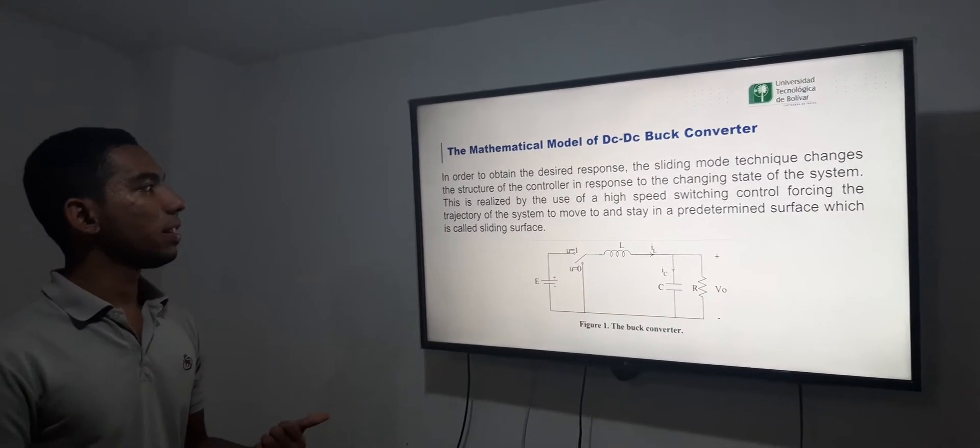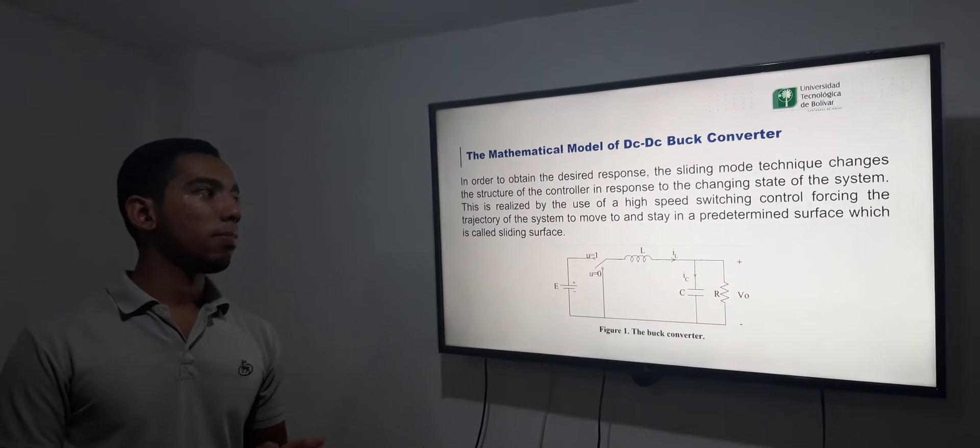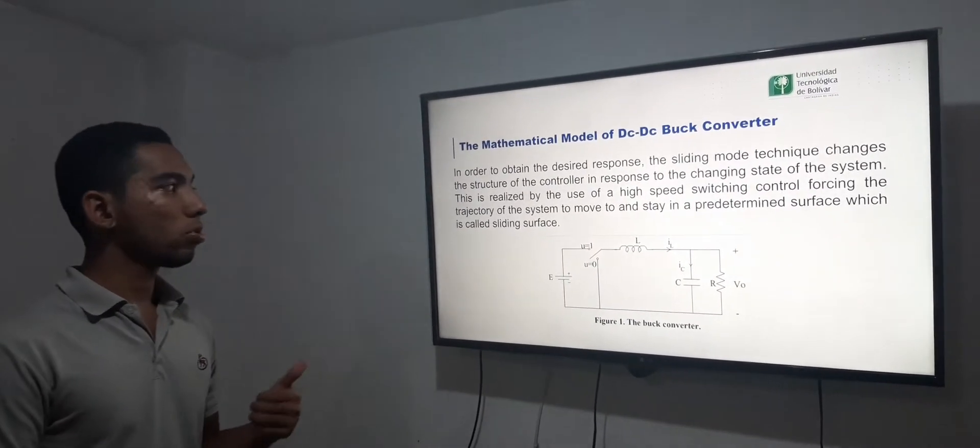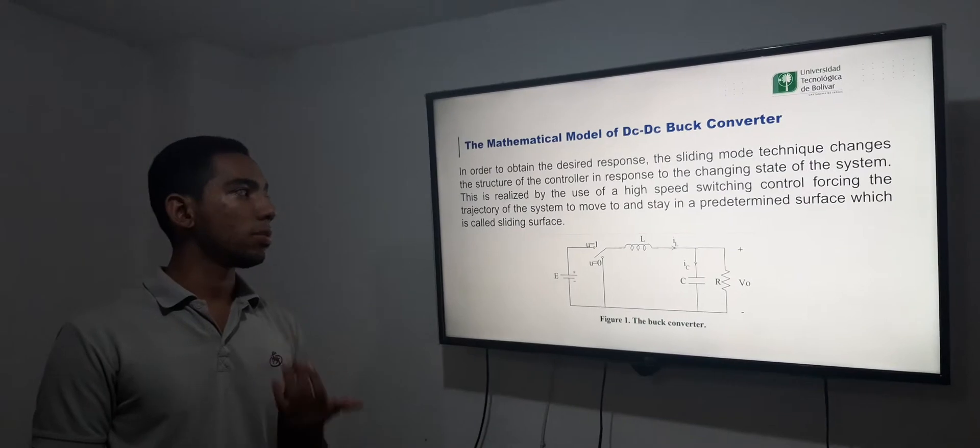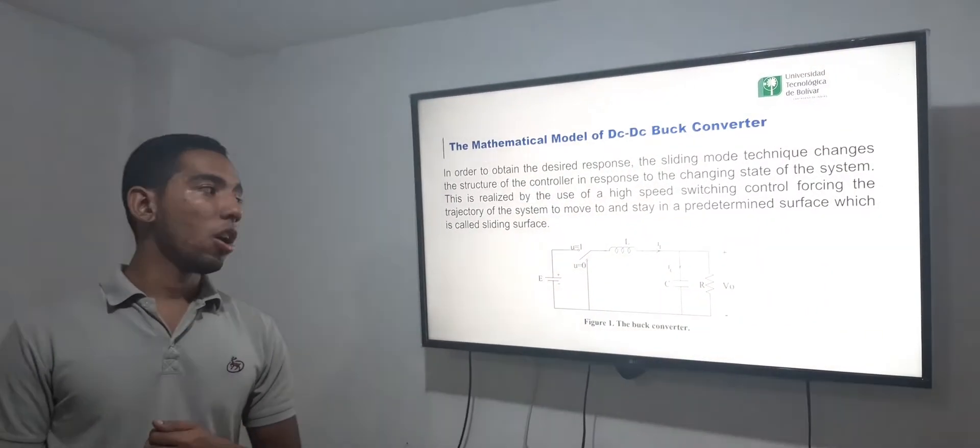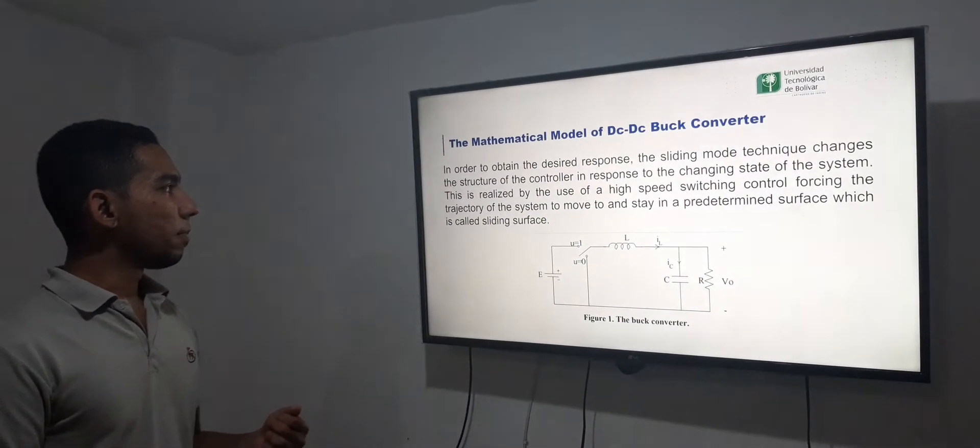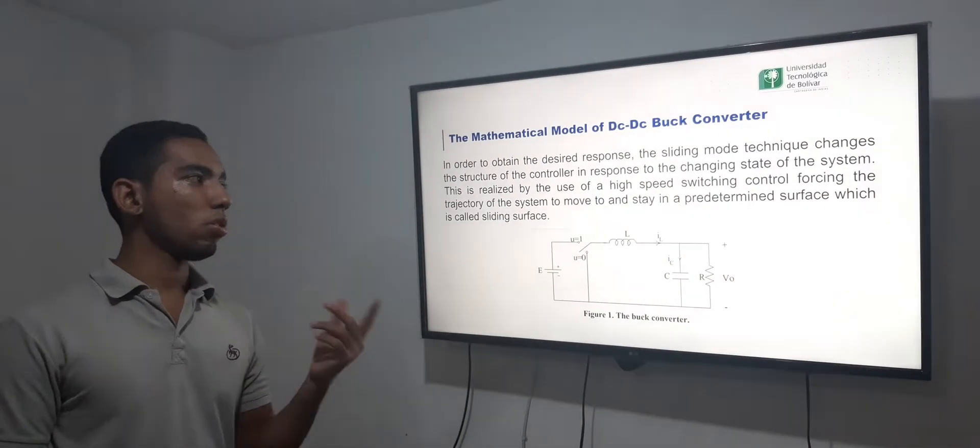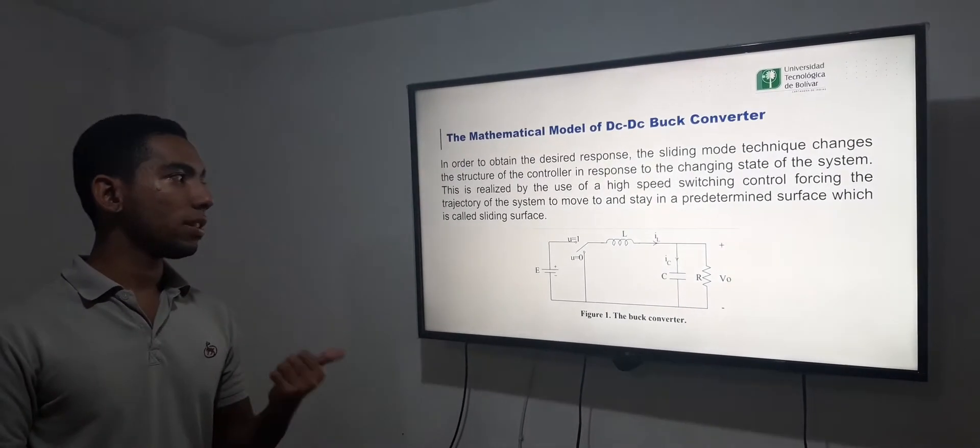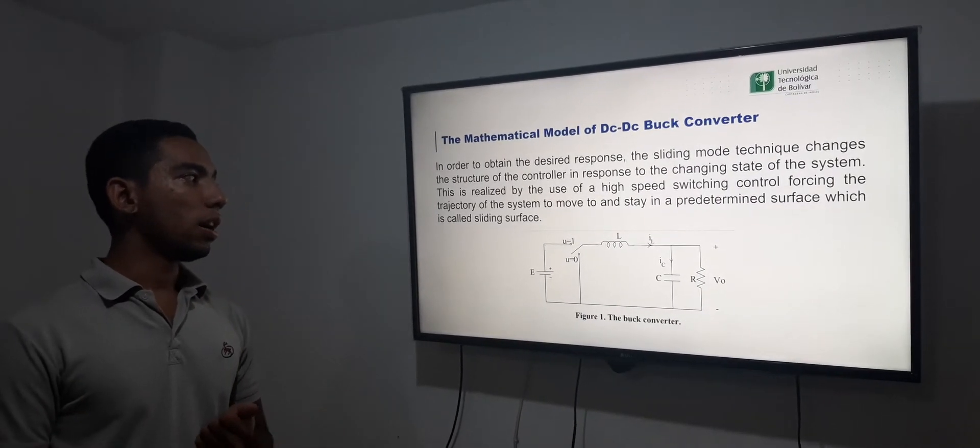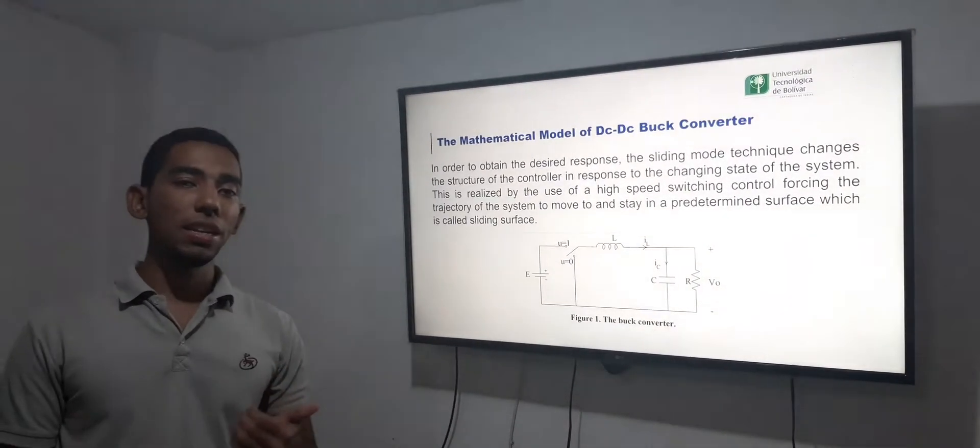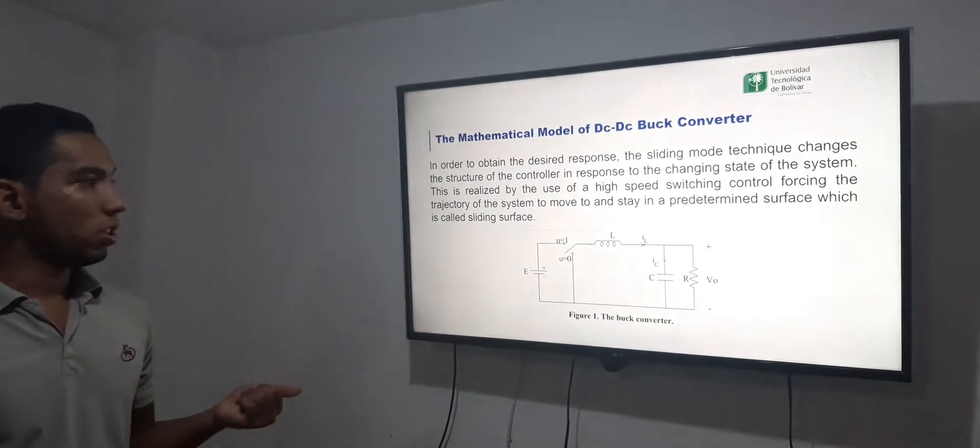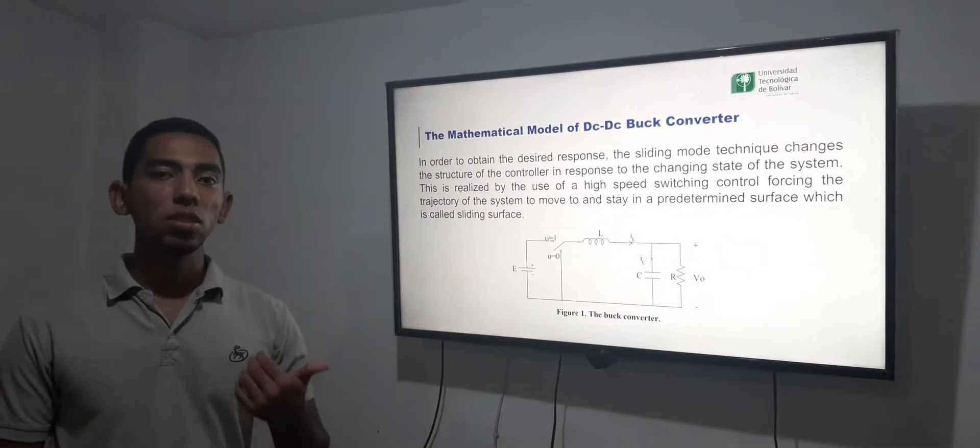In order to obtain the desired response, the sliding mode technique changes the structure of the controller in response to the changing state of the system. This is realized by the use of a high-speed switching control forcing the trajectory of the system to move and stay in a predetermined surface, which is called the sliding surface.